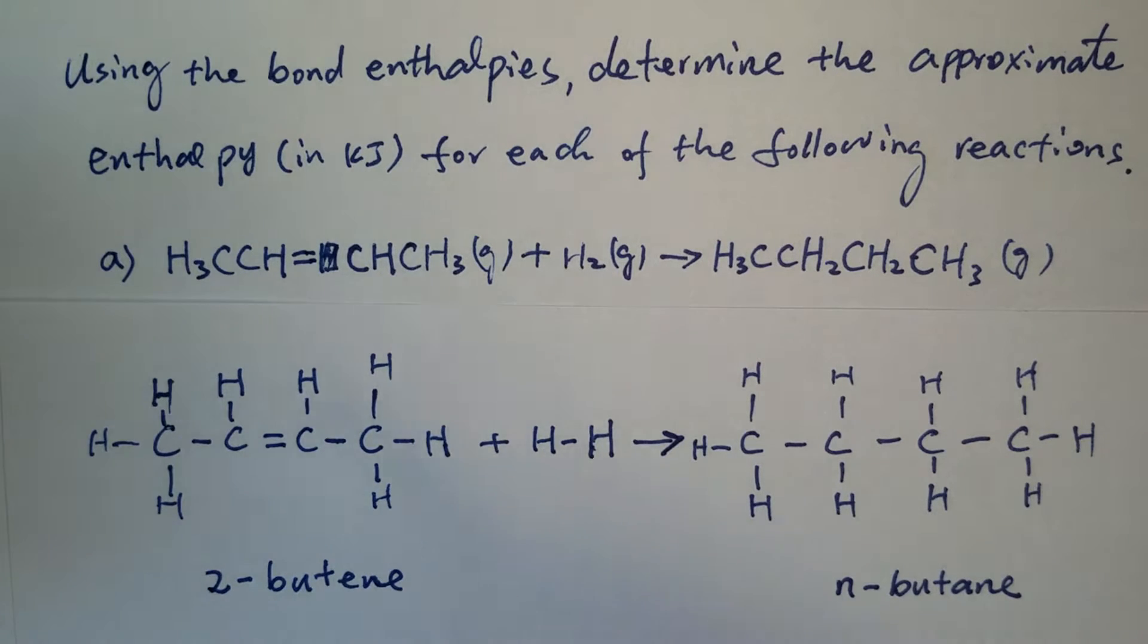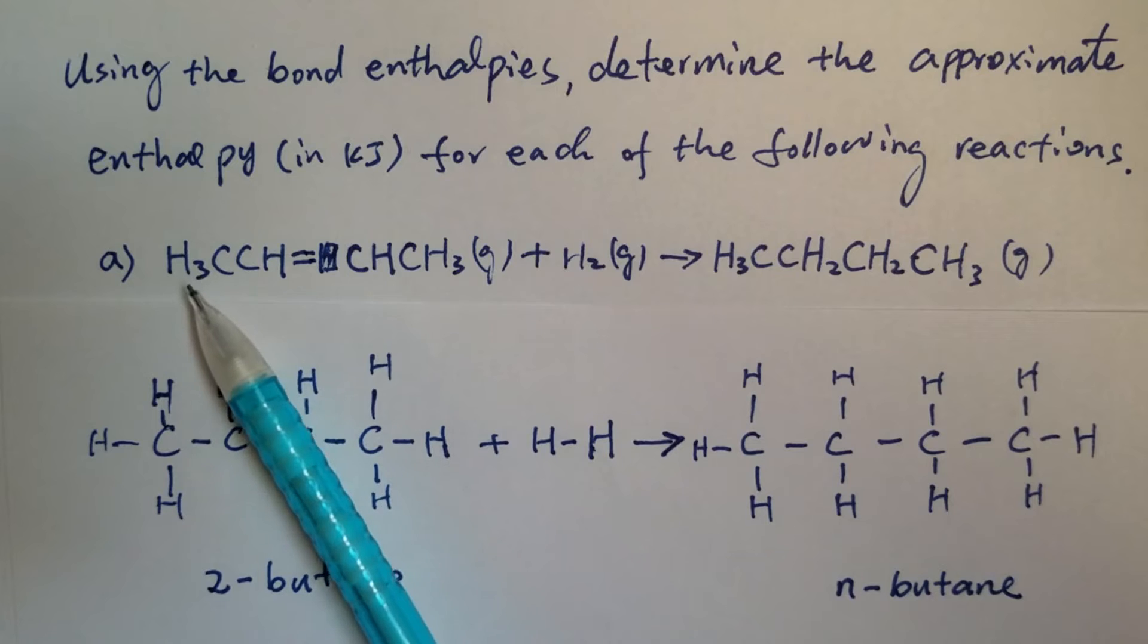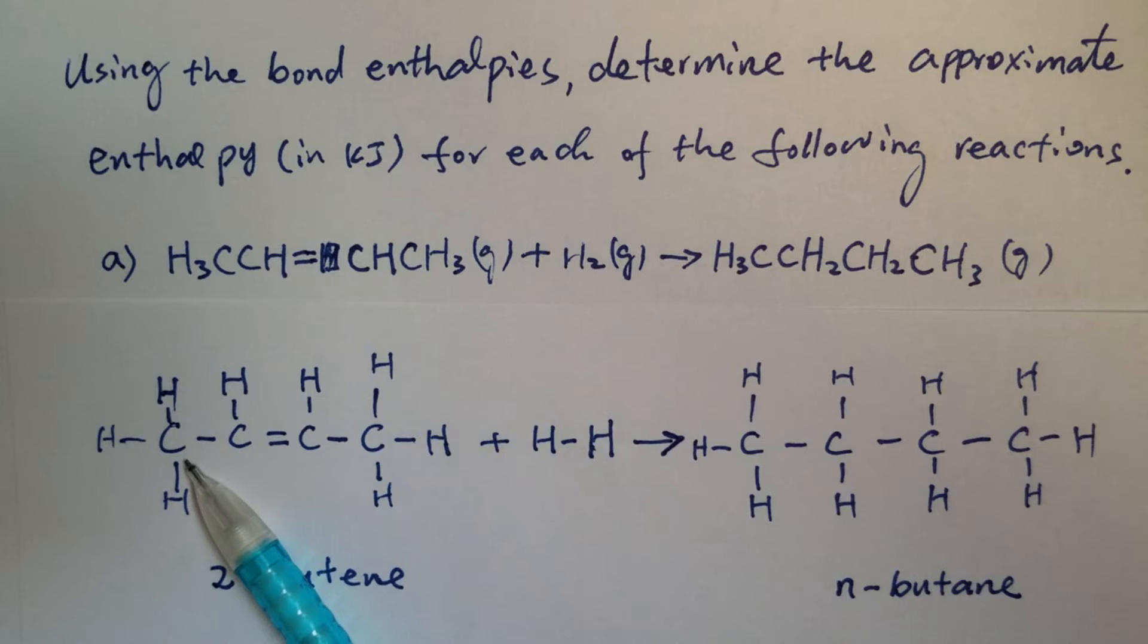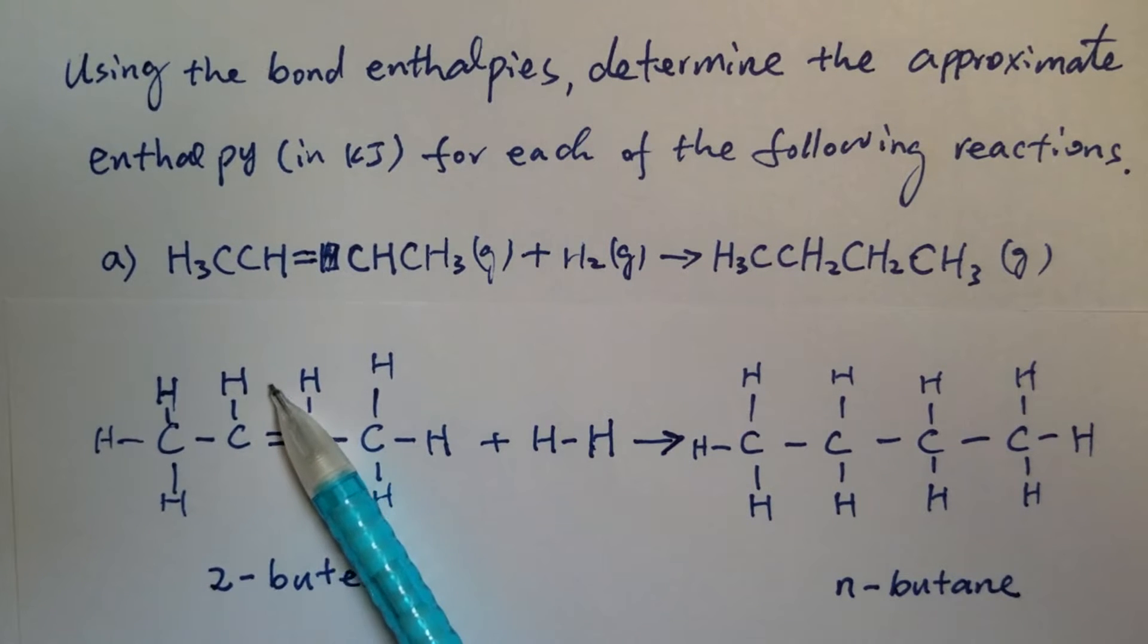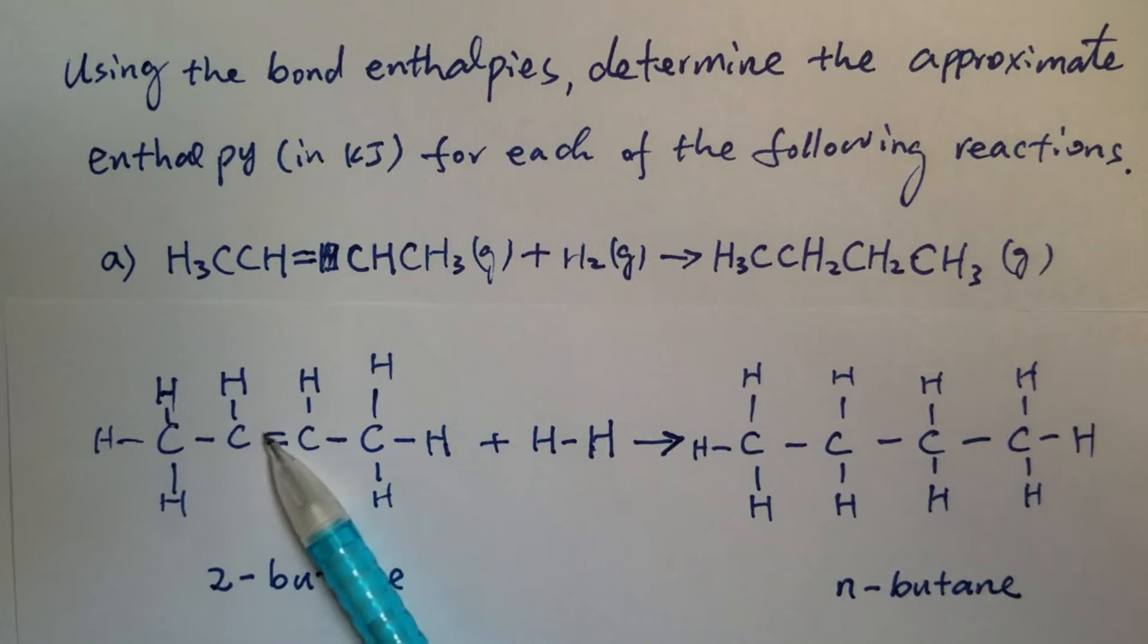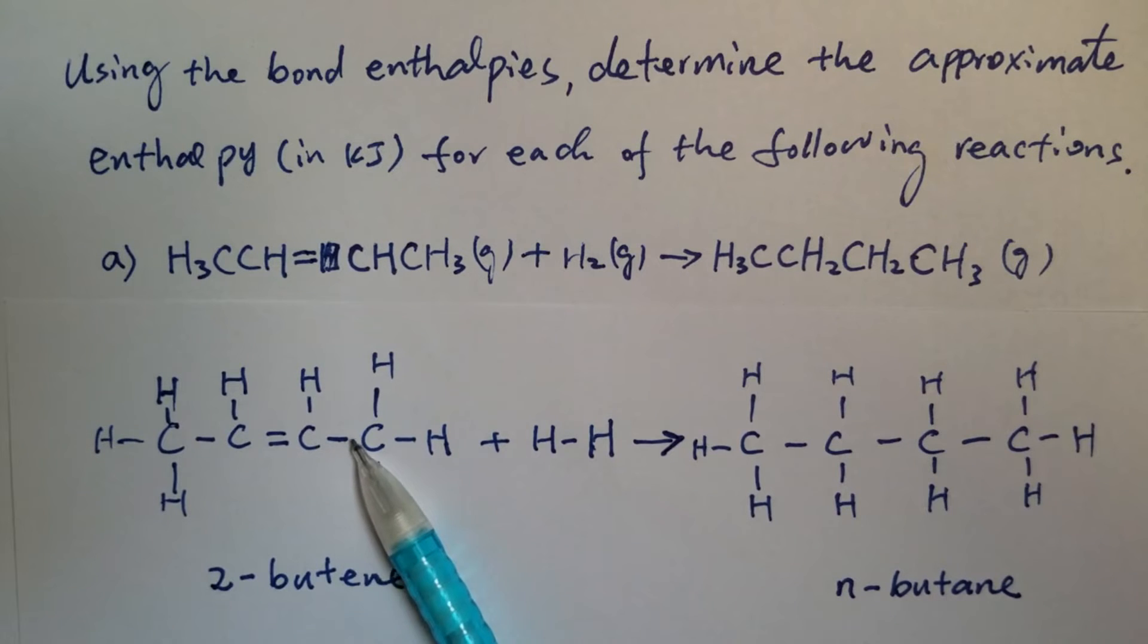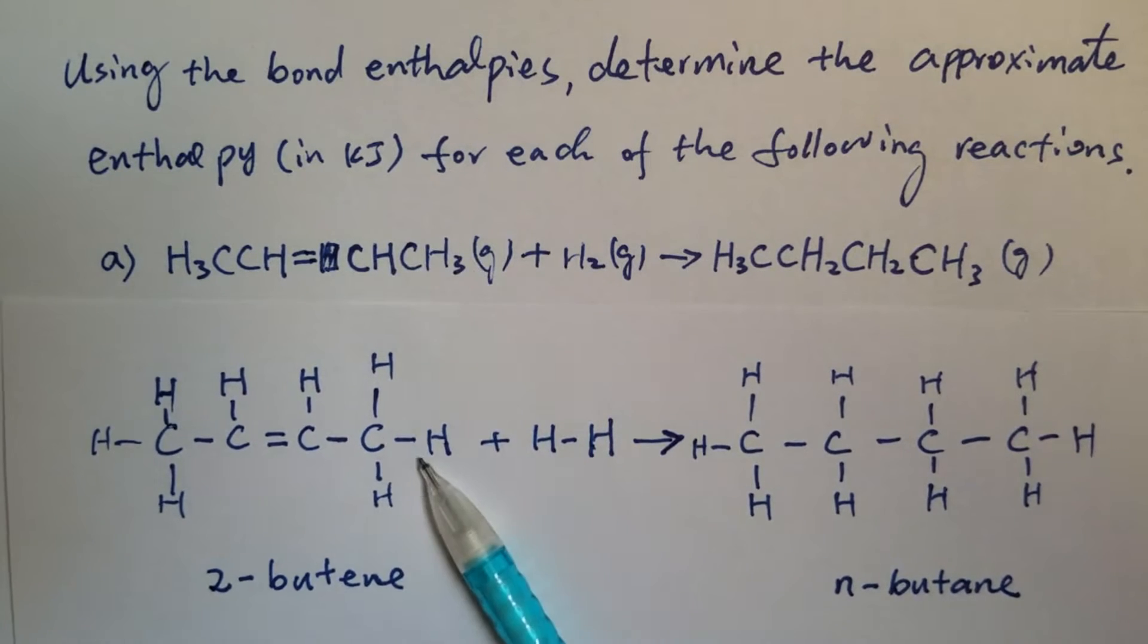In order to solve this problem, first we need to see the structure of these molecules. One of the reactants: you see the H3CCH, the three hydrogens here, then the two carbons. Then this H. And then after that, there's a double bond between carbon and carbon - the second carbon and the third carbon. Then this hydrogen is attached to the carbon. And then there is another methyl group, the CH3. So this is exactly that molecule, the structure of that molecule.